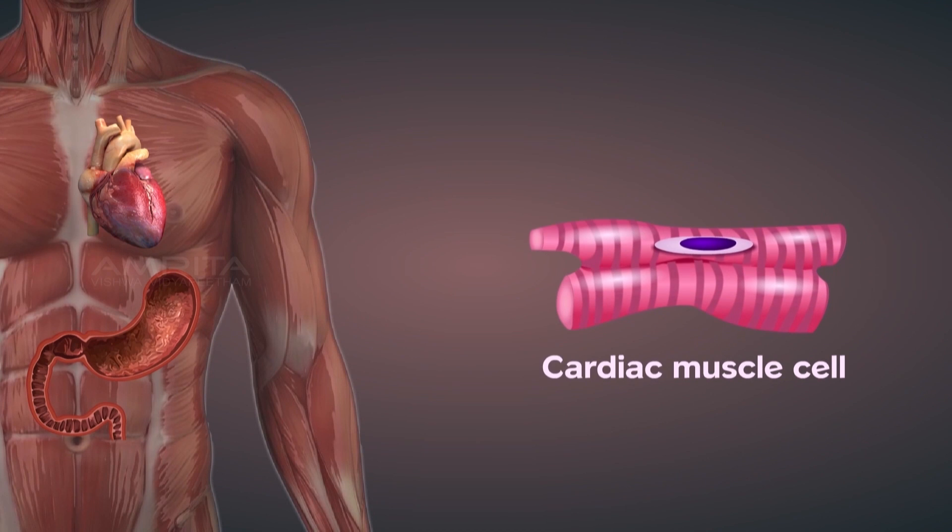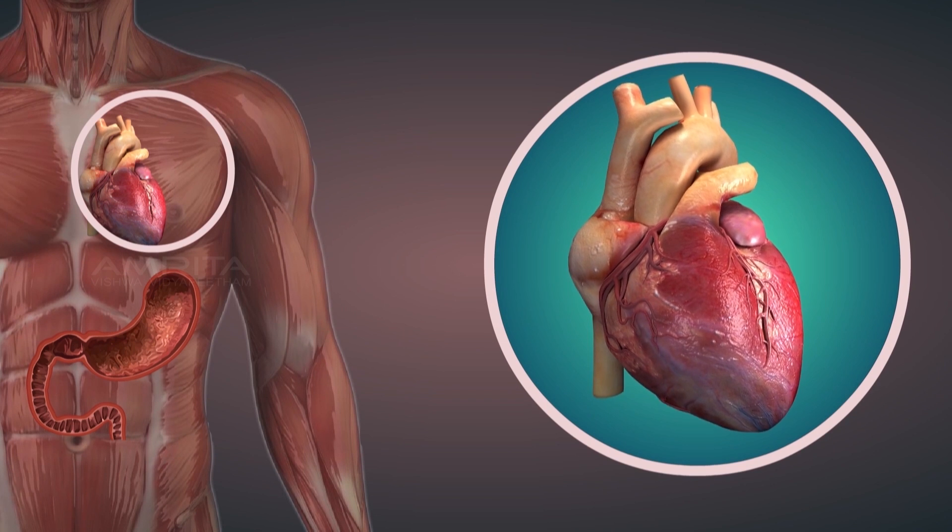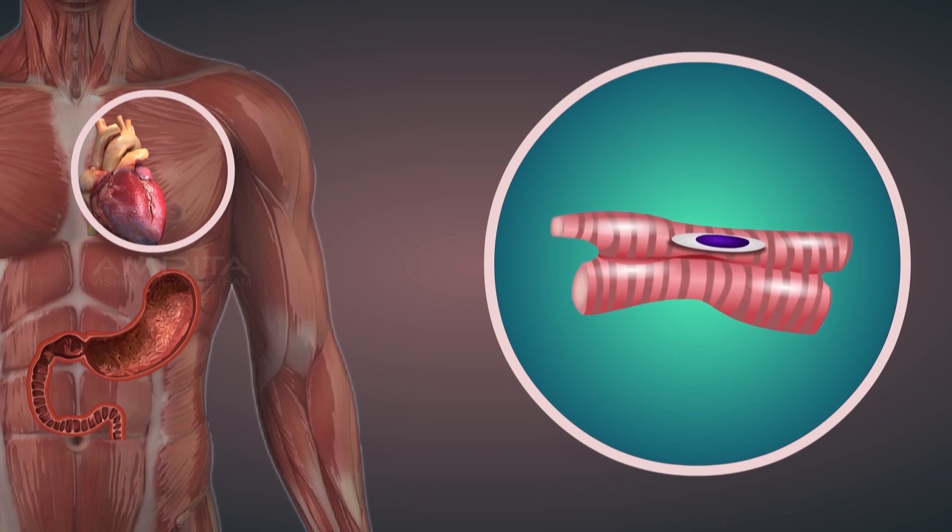The cardiac or heart muscles are involuntary muscle cells that contract and relax throughout life. They are cylindrical, branched and uninucleated.